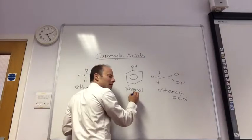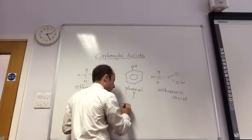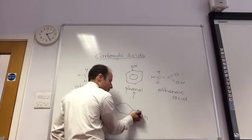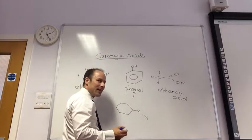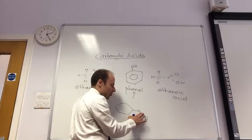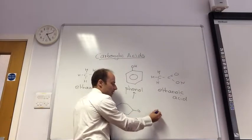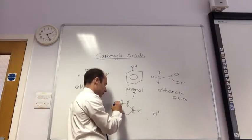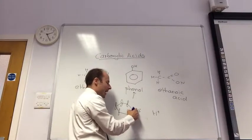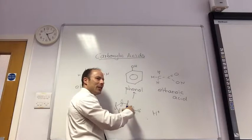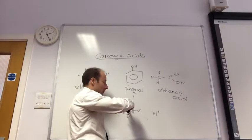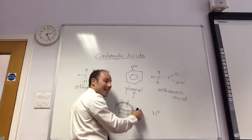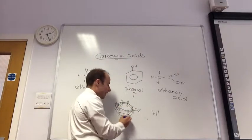The reason why phenol can lose that hydrogen is to give H+, and the oxygen becomes negative. What happens to that lone pair on the oxygen in phenol? Because that lone pair can be donated into the benzene ring. In a similar way, this negative charge can be donated into the benzene ring, which makes it more stable.